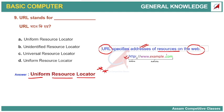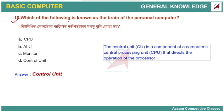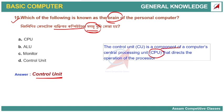The following is known as the brain of the personal computer. The brain of the computer is the control unit. The control unit is a component of the CPU — the Central Processing Unit. The CPU's control unit is the brain of the computer.